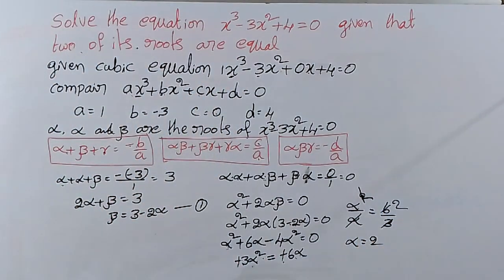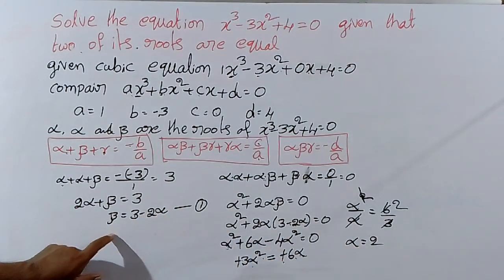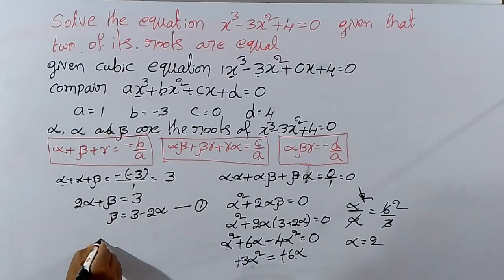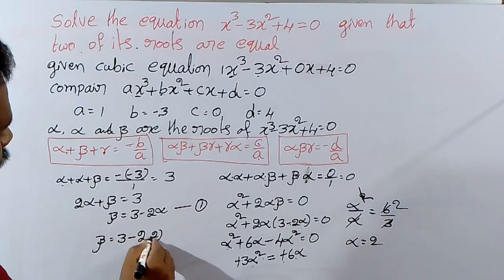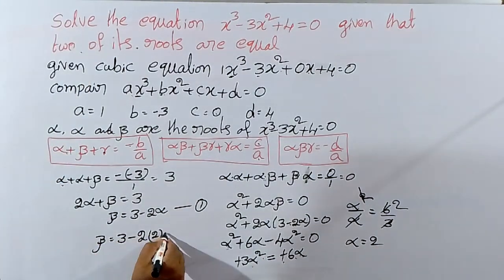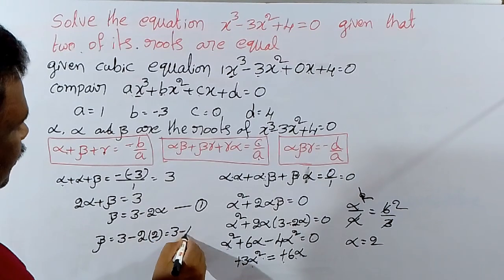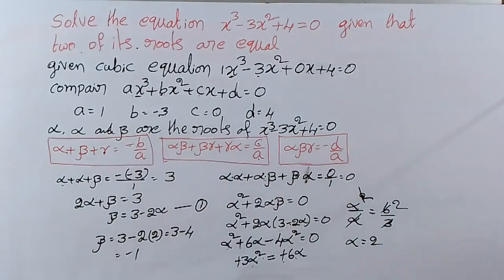So alpha equal to 2. Substituting this alpha value in equation 1: beta equal to 3 minus 2 into 2, that is 3 minus 4, equal to minus 1. Finally, the roots of the equation are alpha equal to 2, alpha equal to 2, and beta equal to minus 1.